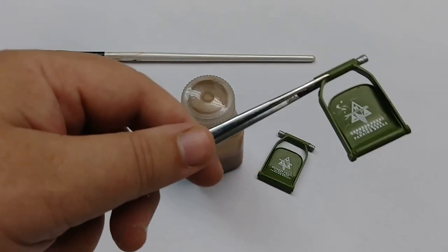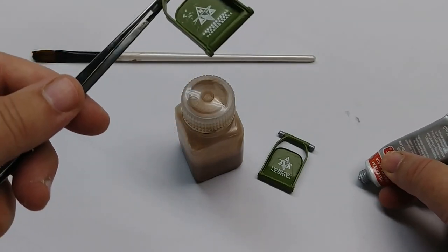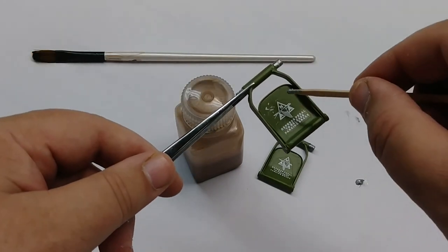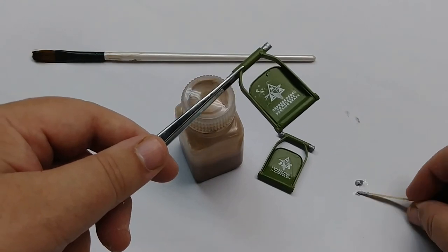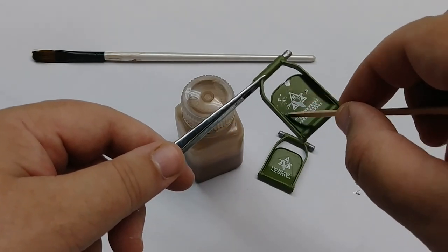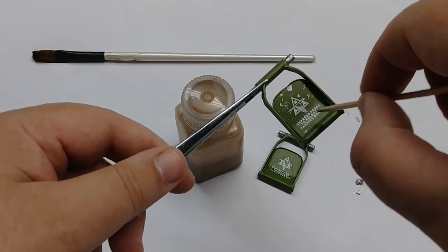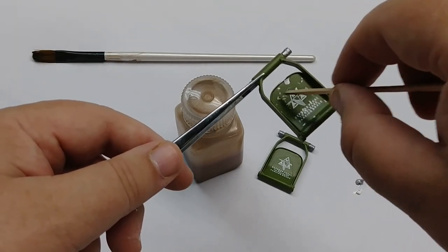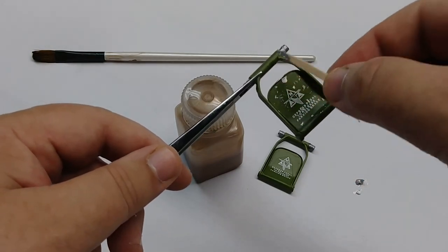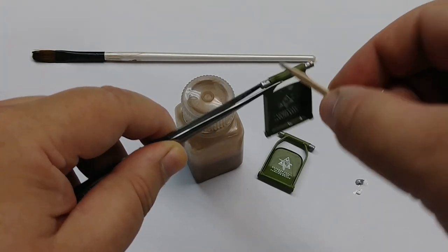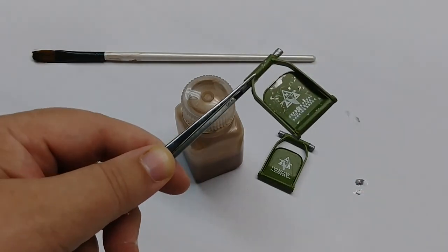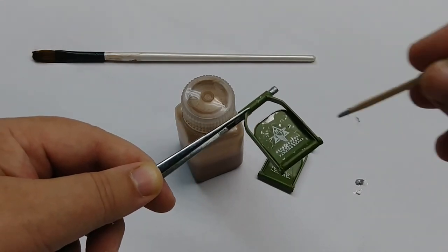Now what I like to do sometimes is I will just take the Rub and Buff and get a little pile of it there. That just looks like a paint flake. You want to randomly do this. If it looks too balanced it doesn't look right. So you want all different sizes to look like it's actually worn. So now we've got it, it looks a lot more worn.